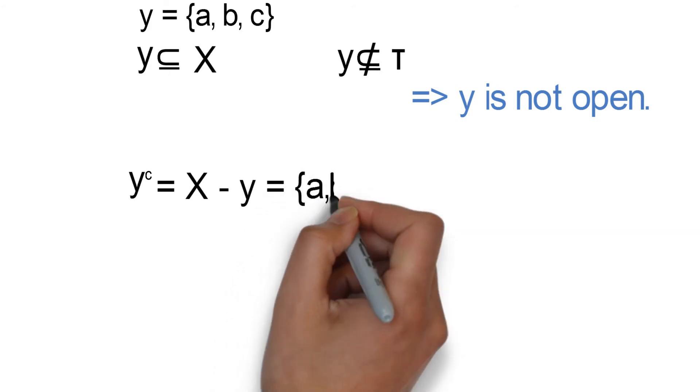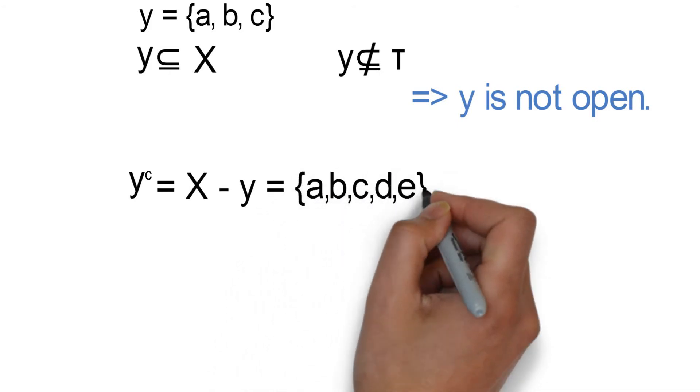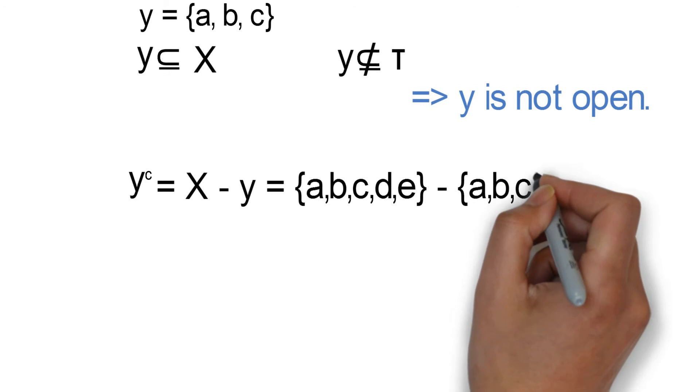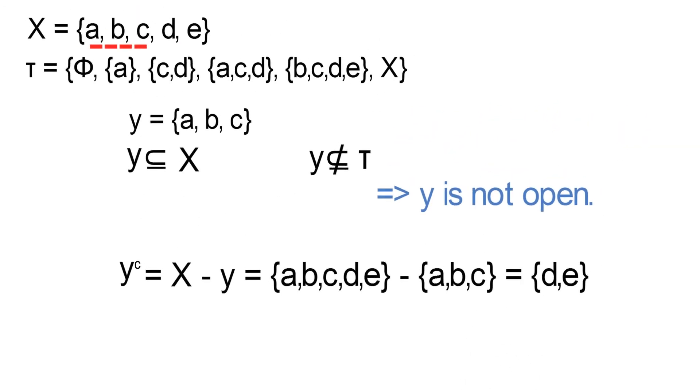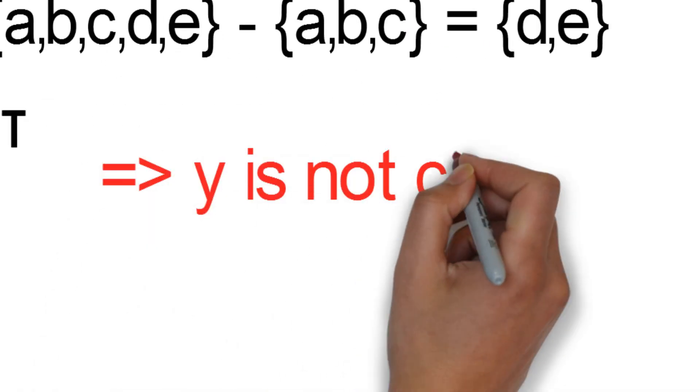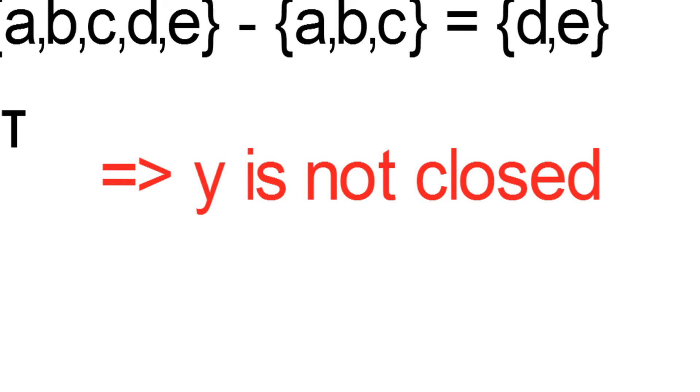This is equal to the elements of X minus the elements of y, which is equal to {d, e}. And we can see that the set {d, e} is not a member of τ. This implies that y is not closed. Therefore, y is neither open nor closed.